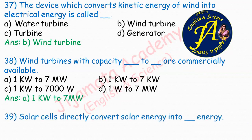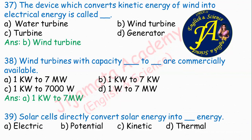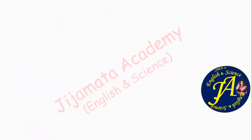Solar cells directly convert solar energy into dash energy. Options are electric, potential, kinetic, thermal. Solar cells directly convert solar energy into electric energy. Option A is the correct answer.